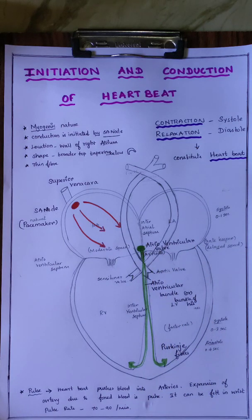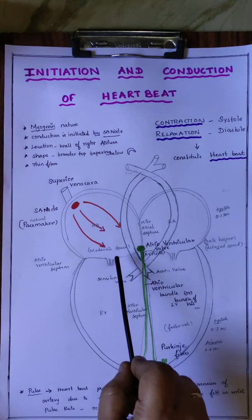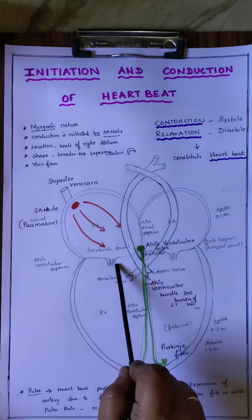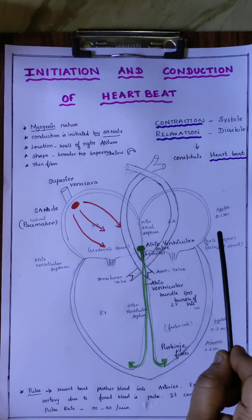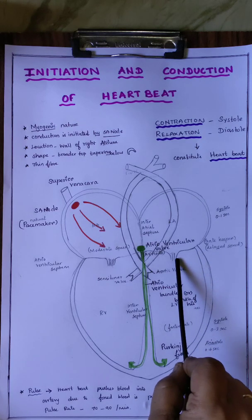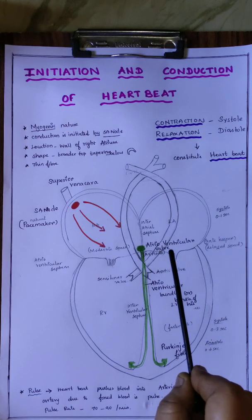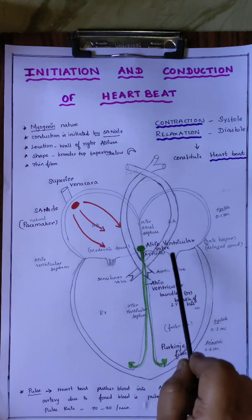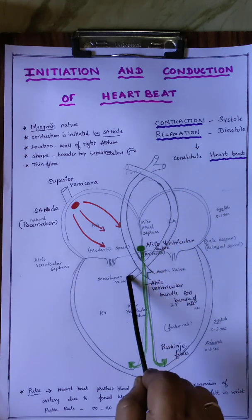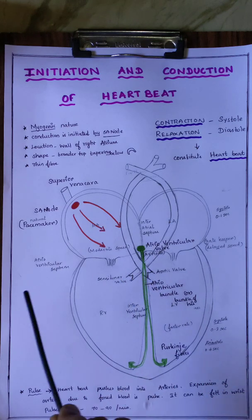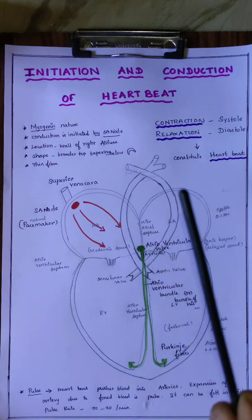There are four valves in the heart. Between the right atrium and right ventricle is the tricuspid valve. Between the left atrium and left ventricle is the bicuspid valve. Below the aorta is the aortic valve, and below the pulmonary artery is the semilunar valve. These are the four valves present in the heart.